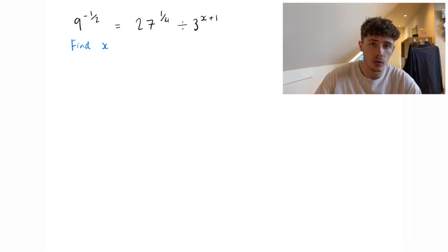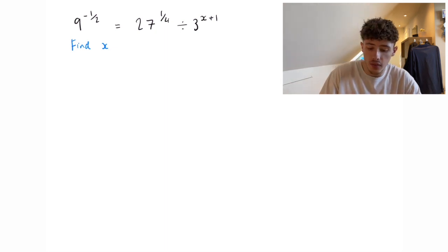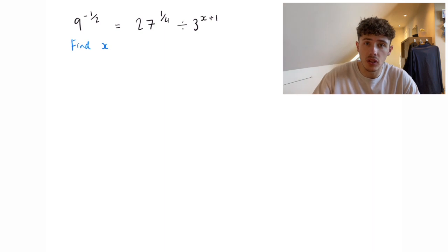When we have indices laws like this, you need to find the base, so what number can they all go into so that they are all powers of that number. Looking at 9, 27 and 3, that base number is just going to be 3.